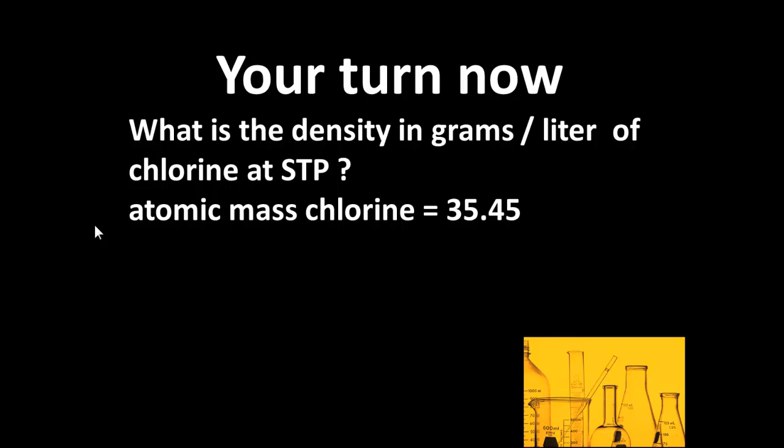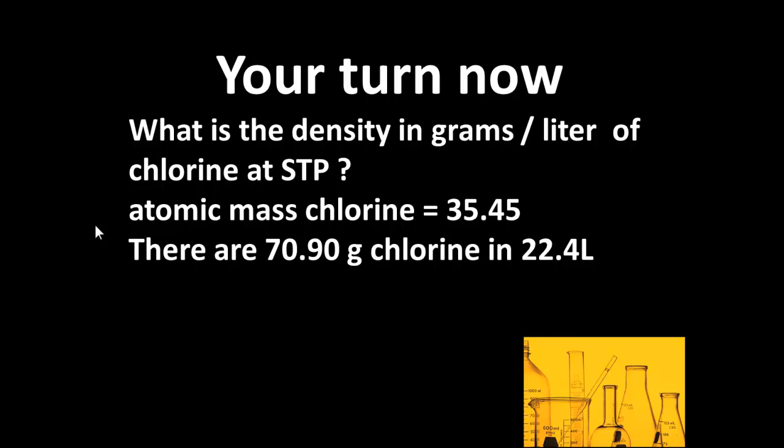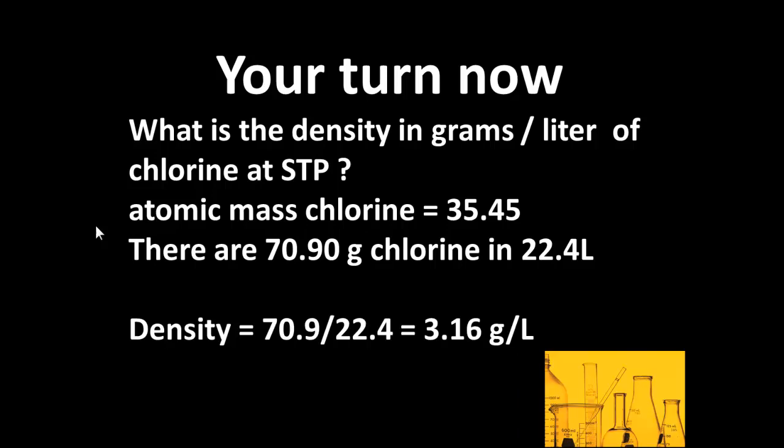We have to calculate the density in grams per liter of chlorine at SDP, and we're given that the atomic mass of chlorine is 35.45. Since chlorine as a gas is Cl₂, you're going to get two atoms in a molecule of chlorine, so there will be 70.90 grams of chlorine at SDP contained in 22.4 liters.